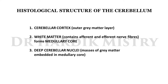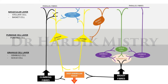The histological structure of the cerebellum includes the cerebellar cortex, which is the outer gray matter. Just inside is the white matter, called the medullary core, containing afferent and efferent nerve fibers. There are three cortical layers: the molecular layer (outermost, with stellate and basket cells), the Purkinje cell layer, and the innermost granule cell layer (with granule cells and Golgi cells).